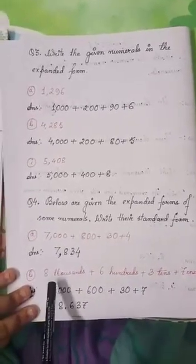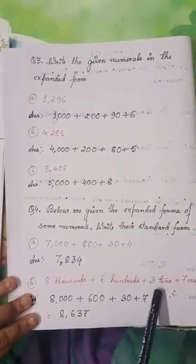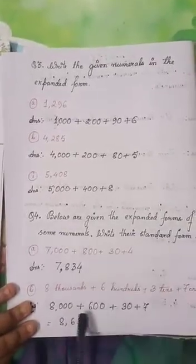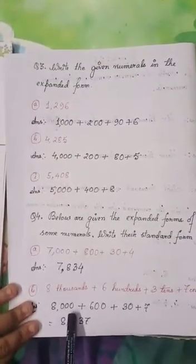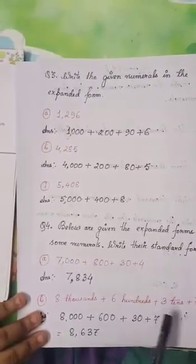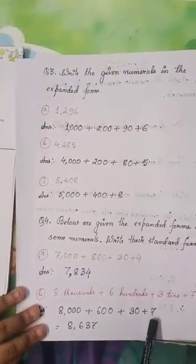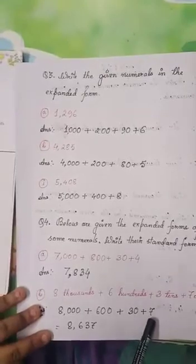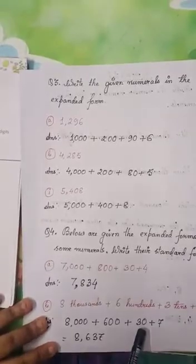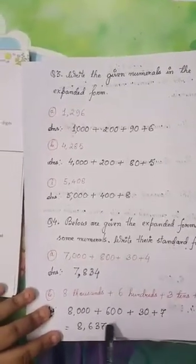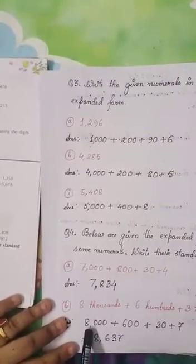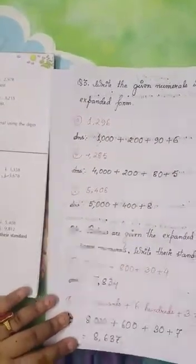Question number B is 8000 plus 600 plus 30 plus 7. We write 7 in the 1's place, 3 in the 10's place since 30 is in the 10's place, 6 in the 100's place since 600 is in the 100's place, and 8 in the 1000's place since 8000 is in the 1000's place.